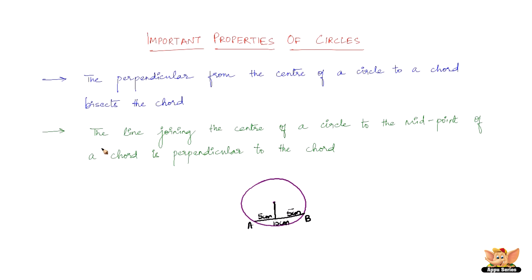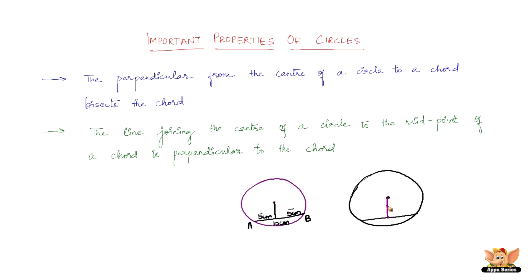The second property here is the converse of the first: the line joining the center of a circle to the midpoint of a chord is perpendicular to the chord. If we have a chord and its midpoint, then the line joining the center of the circle to that midpoint will be at a right angle to the chord.